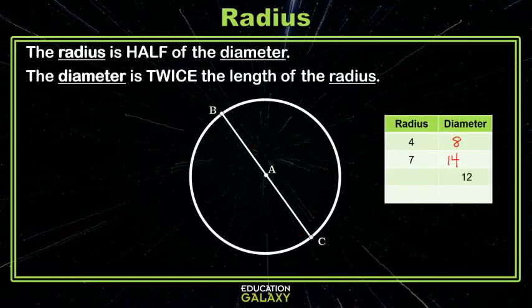Well, what if they give us the diameter? What if they say the diameter is 12? Well, we know the radius is half of the diameter, so half of 12 is 6. What if the diameter is 22? Then what would the radius be? Well, half of 22 is 11. So that means our radius must be 11.